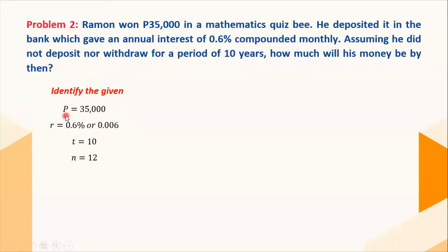Let's identify the given facts. We have here the principal amount or the beginning amount is 35,000 pesos. We also have here the interest rate, which is 0.6%, or it can be also expressed in decimal, which is 0.006. And for the total number of years, that is 10 years, n equals 12, since the interest is compounded monthly.